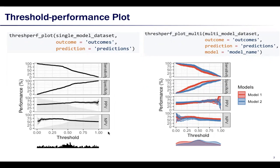The plot shows confidence intervals for each line, represented by the shaded gray area. They show the proportions of cases that would be categorized as positive or negative at the given threshold. The distribution of predictions is shown at the bottom of the figure.